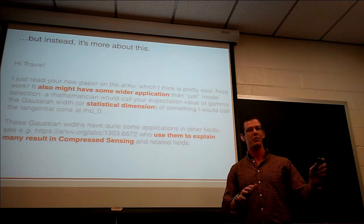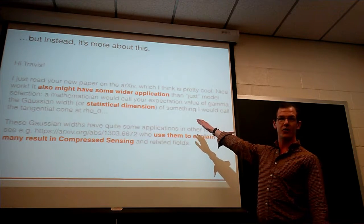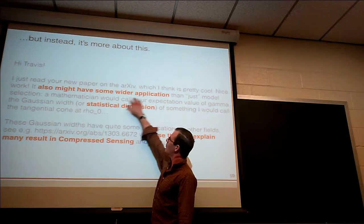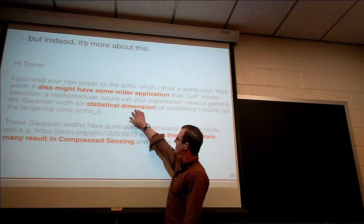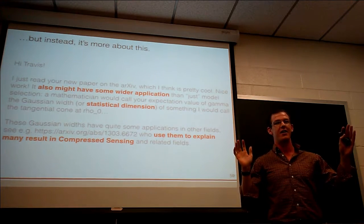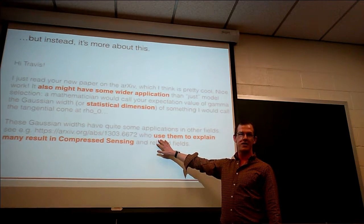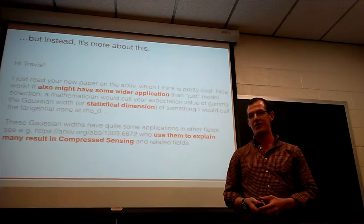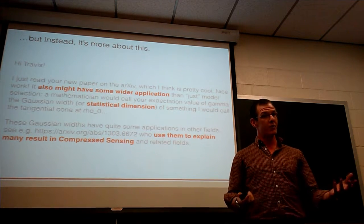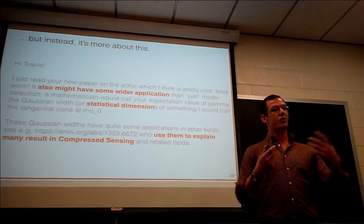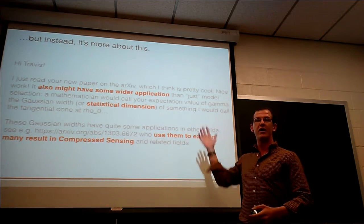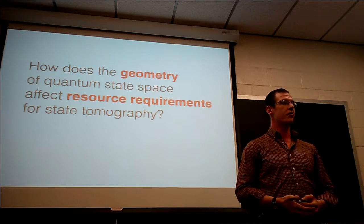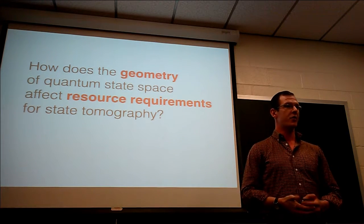About a day after the paper was posted, I received a wonderful email from a graduate student in Cologne, Germany. He said, 'Travis, your paper is so great. This thing that you calculated has some wider application than you think, because you computed something called a statistical dimension of some kind of cone in quantum state space.' And people use these statistical dimensions to prove things in classical compressed sensing. So ever since September, I've been furiously attempting to understand all of the related literature, which I've presented about at the archive review meetings.